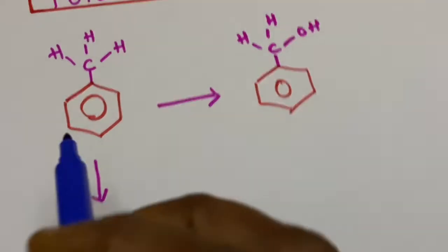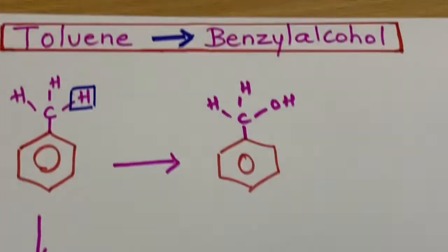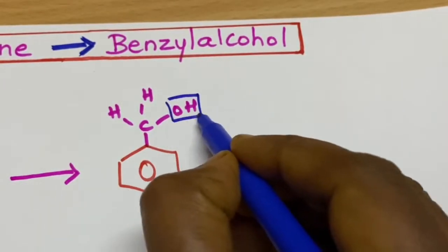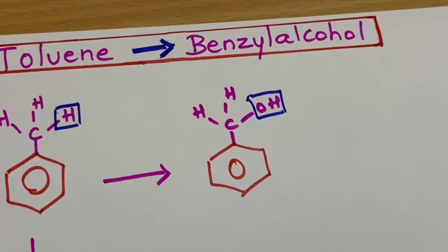If you see here, one of the hydrogen atoms in the toluene side chain has been replaced by the hydroxyl group. So you have to think of a reagent which will convert the hydrogen to hydroxyl group.